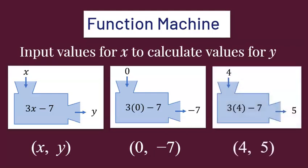If we plug in 4 for the variable x, we get 3 times 4 minus 7. Well, 12 minus 7 is 5, so if the input is 4, the output is 5, and that can be represented by the ordered pair (4, 5).